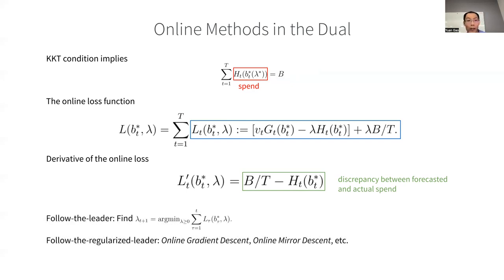So there is a range of online optimization methods we can use for this problem. In particular, a follow the leader method means that at each request, we find the optimum lambda that would minimize aggregate losses seen in the past. In practice, this can be achieved by replaying the past auctions to find the lambda t plus 1.